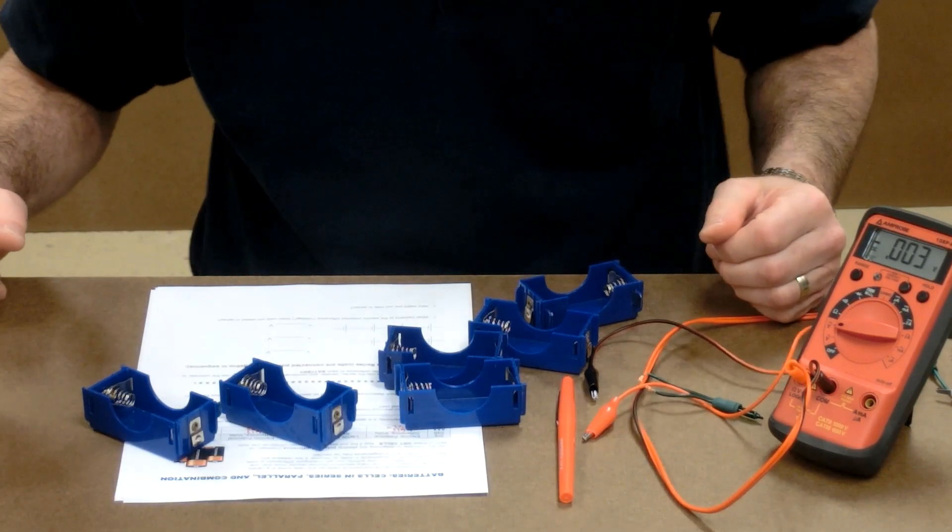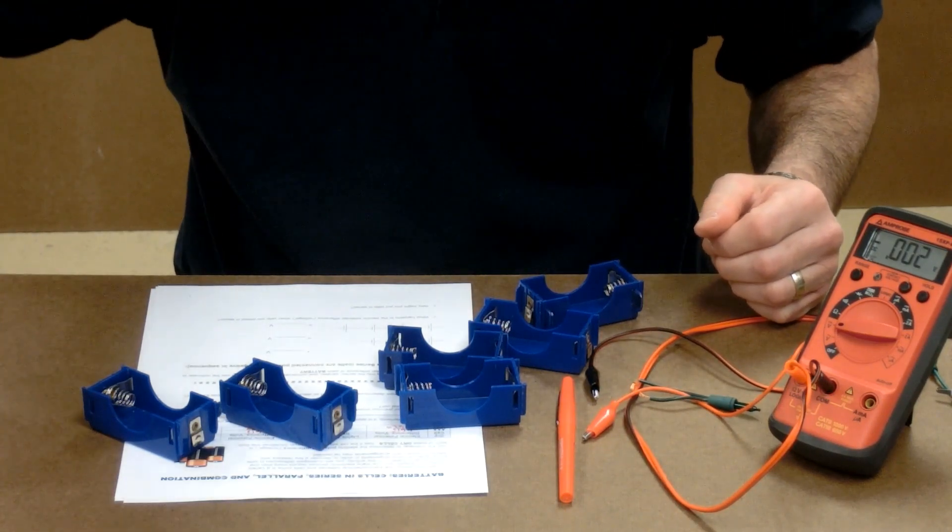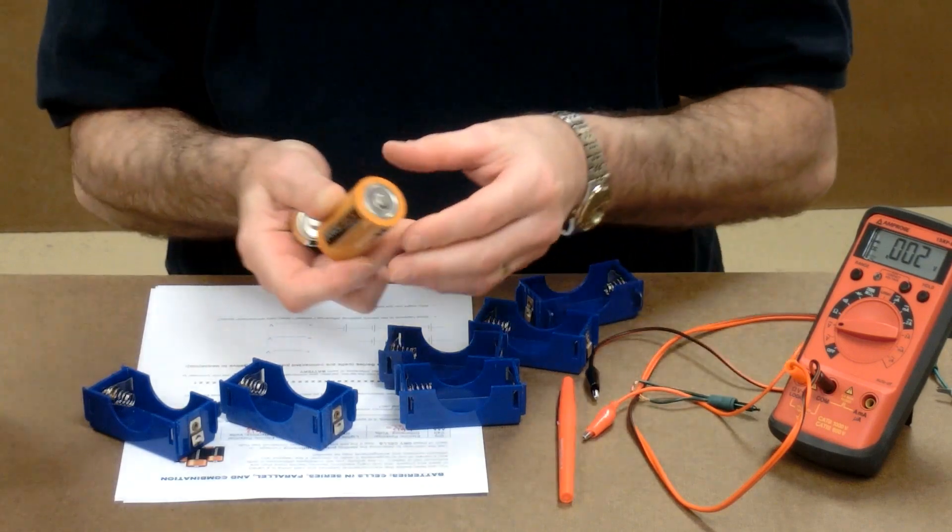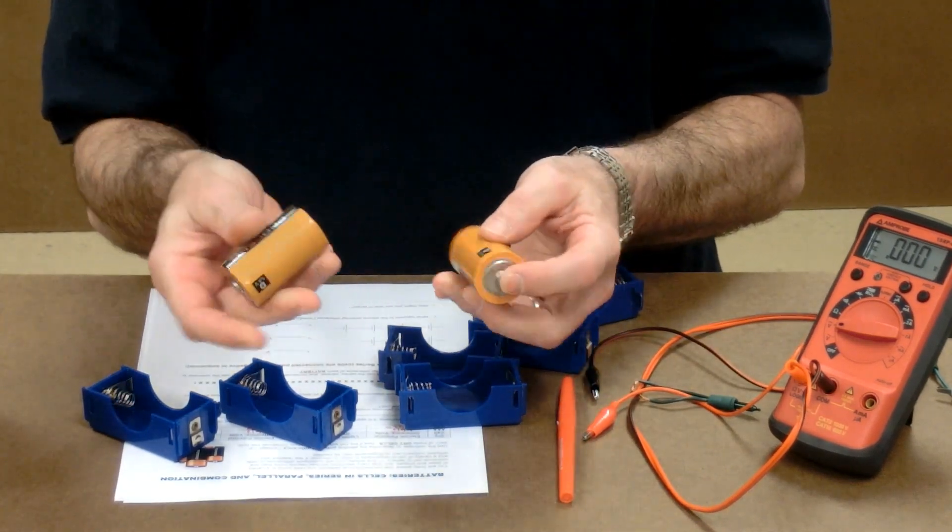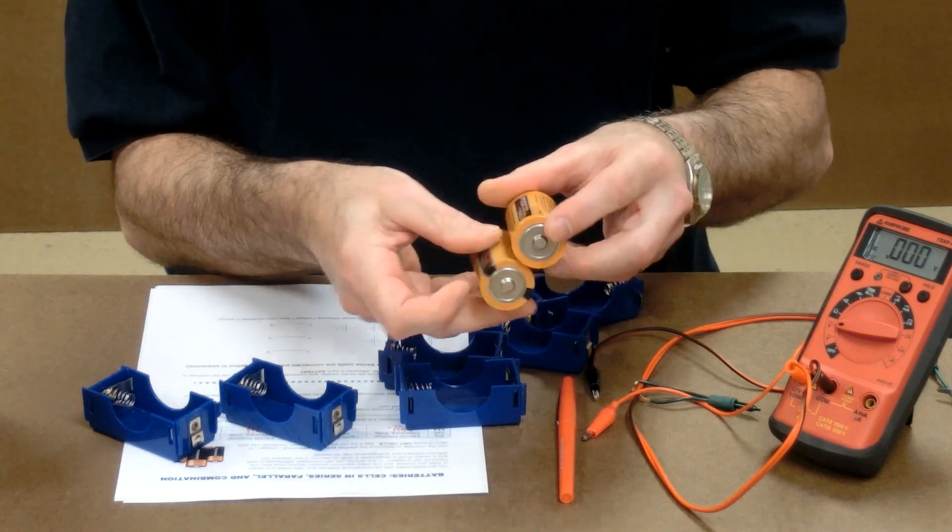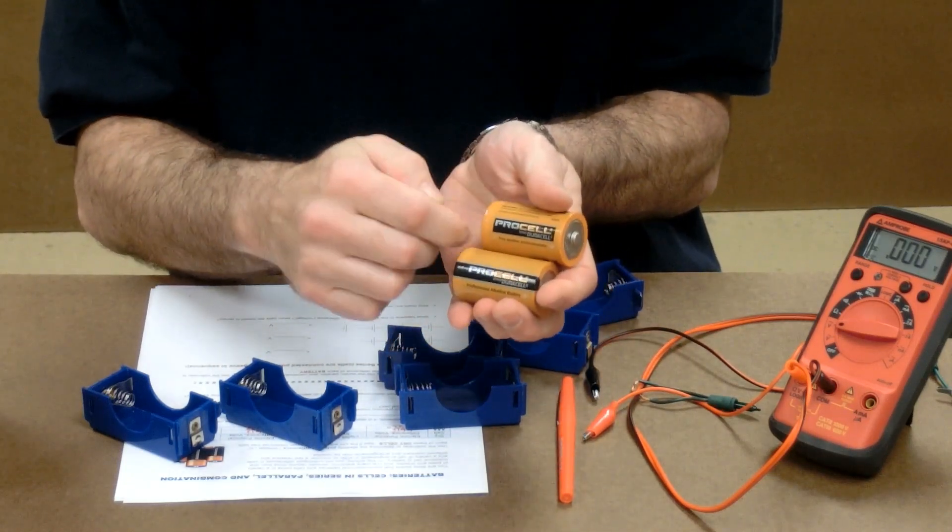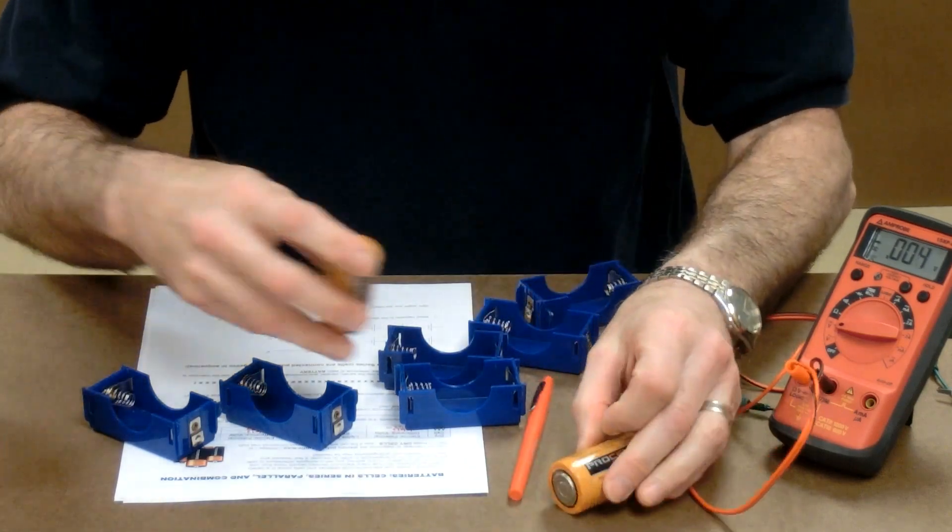We're now going to see what happens when we connect multiple cells together. We can connect them together in series where the positive of one is connected to the negative of the other, or we connect them in parallel where the positives are connected and the negatives are connected. First we'll do series.